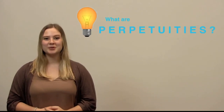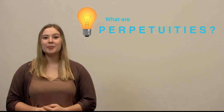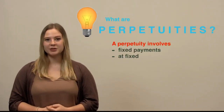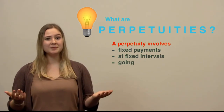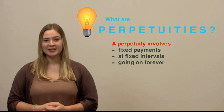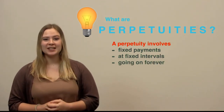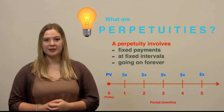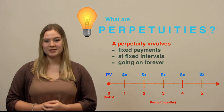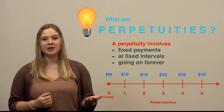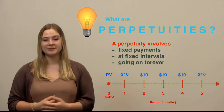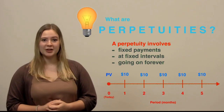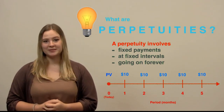Let's start with perpetuities. A perpetuity is a stream of fixed payments delivered at fixed intervals for, well, forever. Suppose my parents decided to give me an allowance of $10 every month and never stopped, so I'd receive $10 each month forever. What some might call a failure to launch, I would call it a perpetuity.